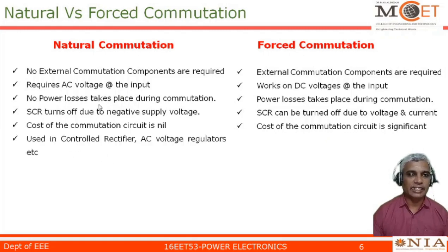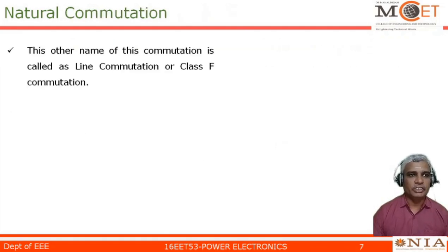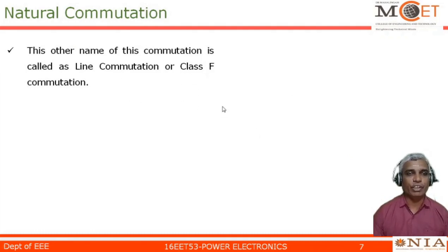Natural commutation is mostly used in controlled rectifiers, AC voltage regulators, etc. Whereas forced commutation circuits are used in choppers, inverters, etc. The other name for natural commutation is line commutation, or it is also called as Class F commutation.